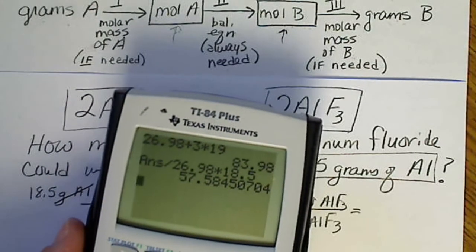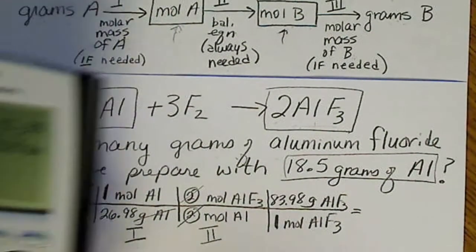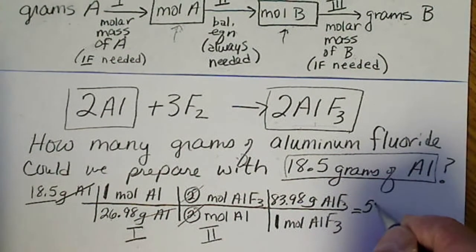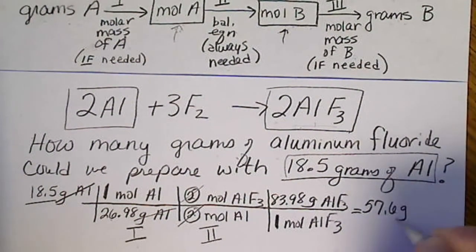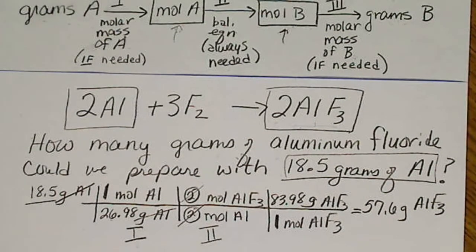And when I do that, I get 57.584. We'll round that to three significant figures and call that 57.6. And that would be how many grams of aluminum fluoride we could prepare from 18 grams of aluminum.